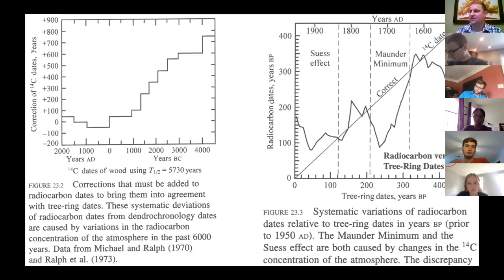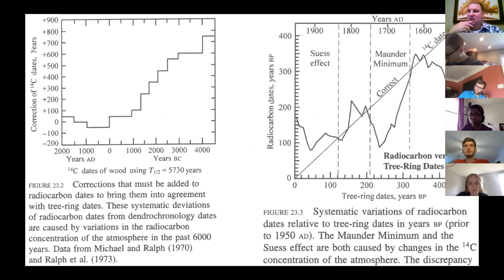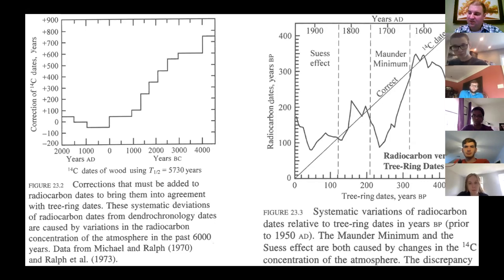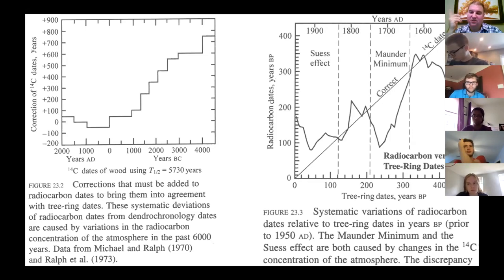To clarify the Maunder Minimum: decreased sunspot activity produces lower-energy particles from the solar wind, which are more likely to create slow neutrons. More slow neutrons means more carbon-14 produced. More parent material makes it look like less has decayed, so the sample appears younger. The Maunder Minimum is based on sunspot activity; the Suess effect is based on the industrial revolution and burning of fossil fuels.